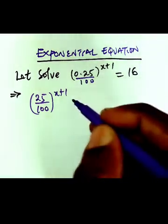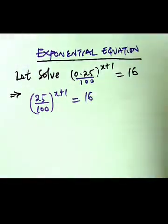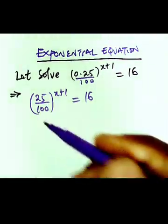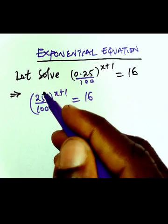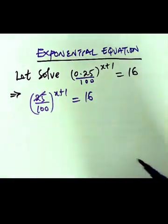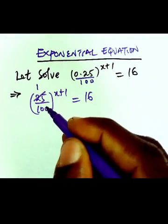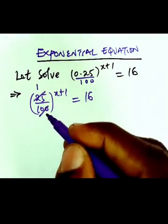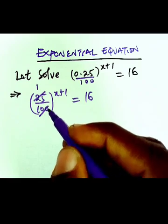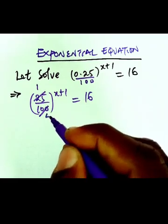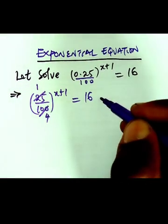From here we have it equal to 16. What's the next thing to do? If you divide through, divide this by 25, I'm going to have 1 here. Divide 100 by 25, we are going to have 4. So we can have this equation to be...